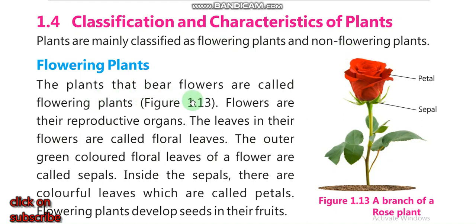The plants that bear flowers are called flowering plants. Flowers are the reproductive organs. The leaves in their flowers are called floral leaves. The outer green-colored floral leaves of the flower are called sepals, and inside the sepals there are colored leaves which are called petals.